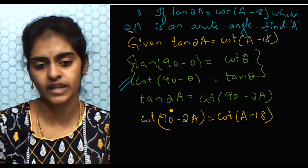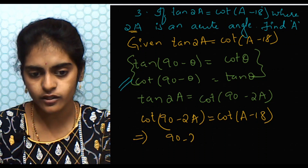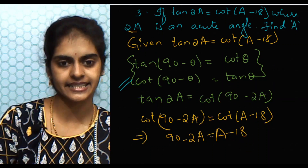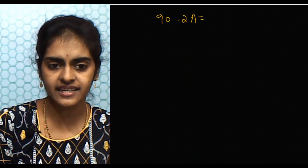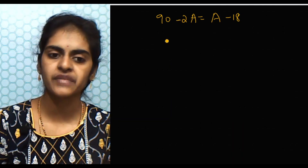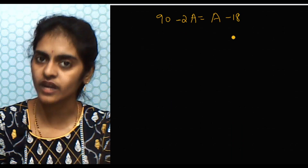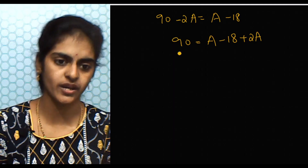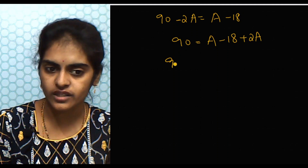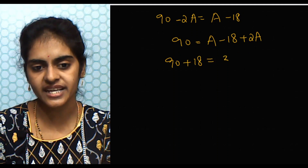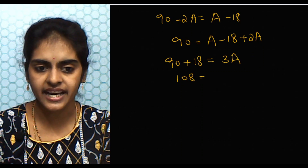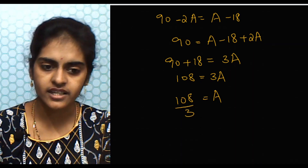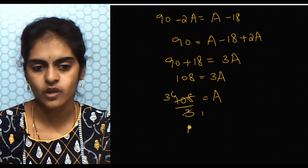Since 2A is an acute angle, we can remove the cot and equate the angles: 90 − 2A = A − 18. Rearranging: 90 + 18 = A + 2A, giving 108 = 3A. Therefore A = 108 ÷ 3 = 36. So A = 36 degrees.